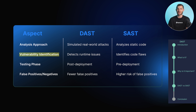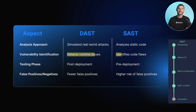Regarding vulnerability identification, DAST excels at detecting runtime vulnerabilities like authentication issues, insecure configurations, and business logic flaws. SAST is effective at identifying code-related vulnerabilities like input validation errors, cross-site scripting, SQL injection, and buffer overflows.